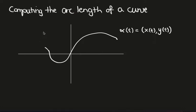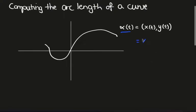Okay, so in this video we want to look at computing the arc length of a curve, let's say α(t), parameterized by some parameter t, which we'll write as (x(t), y(t)). This is vector notation, so we can also write this as x(t)i plus y(t)j.